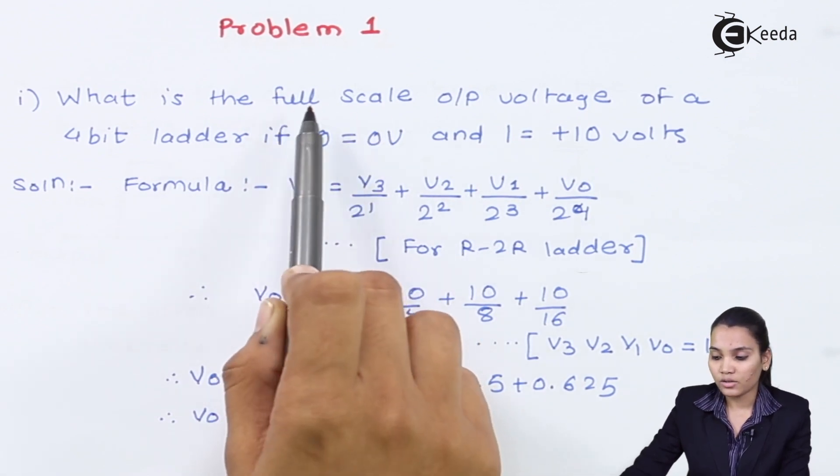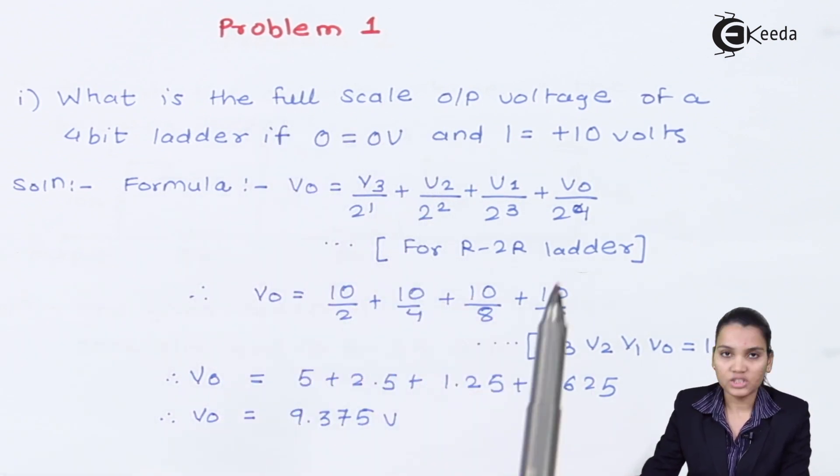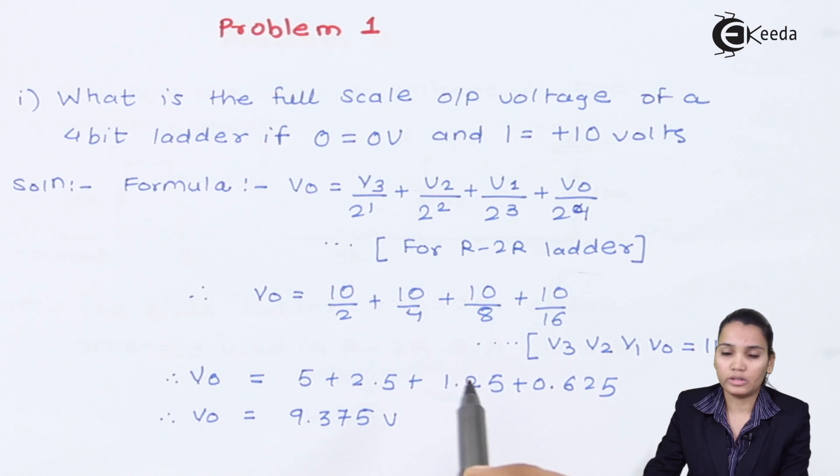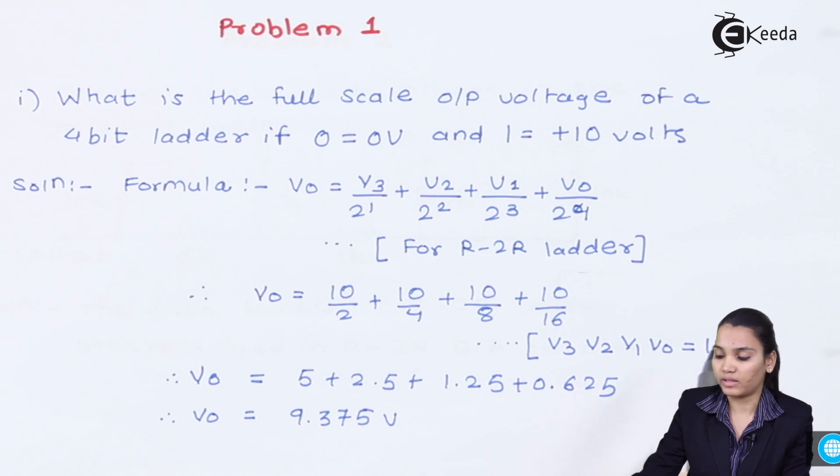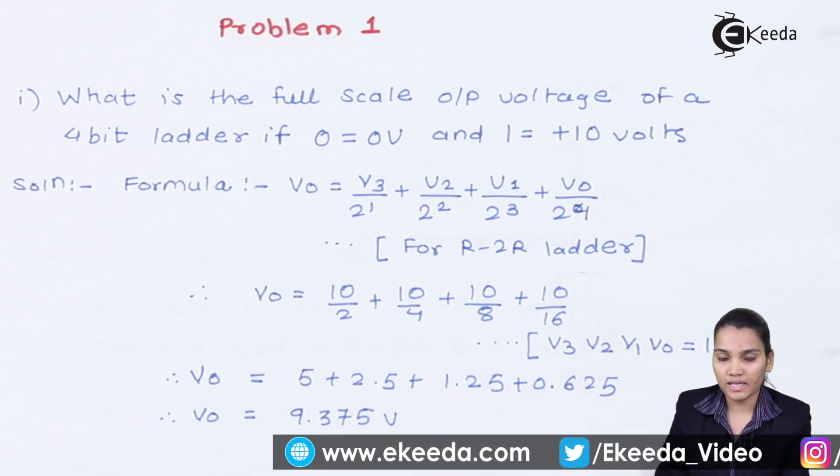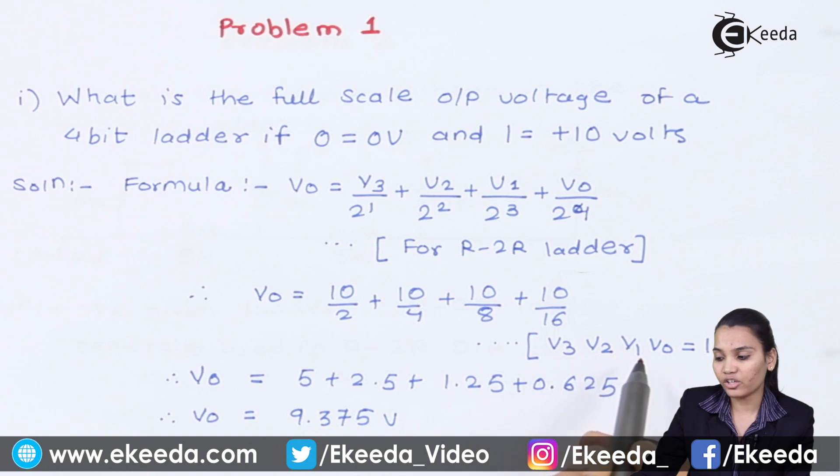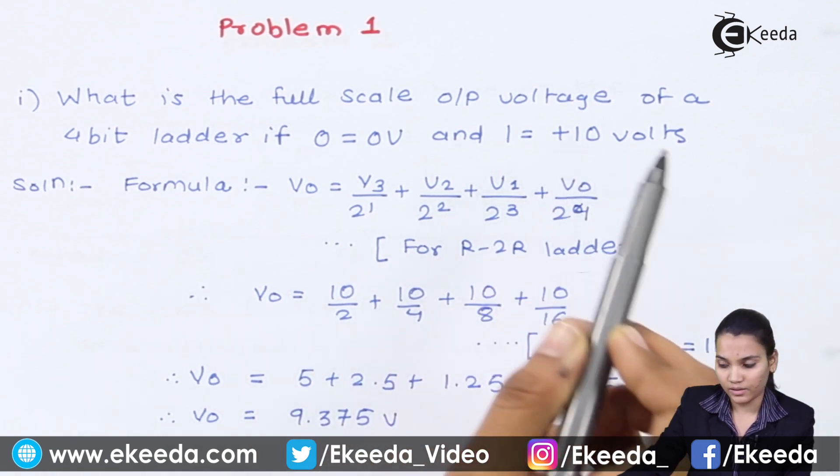Now we have to calculate the full scale output voltage. We all know that full scale output voltage is calculated only when all the input values are 1, 1, 1, and 1. Therefore to calculate the full scale output voltage, we will consider the input V3, V2, V1, V0 as the high input, that is value 1, 1, 1, 1.